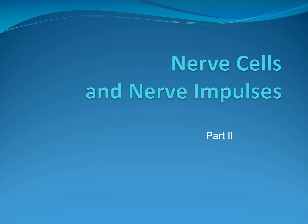For this second part of nerve cells and nerve impulses, I'll discuss the blood-brain barrier rather briefly, and then start talking about nerve impulses or conduction down the axon.